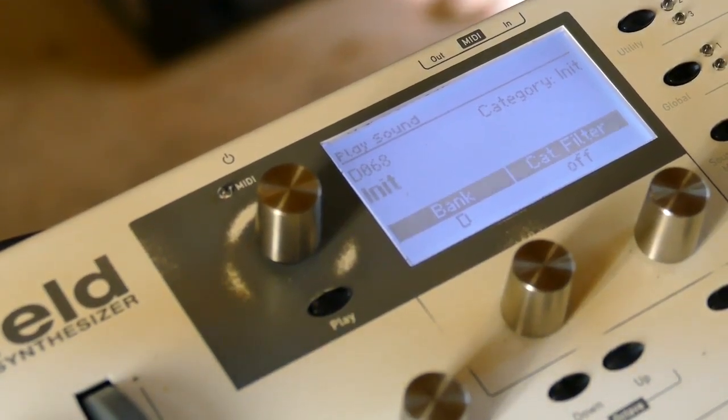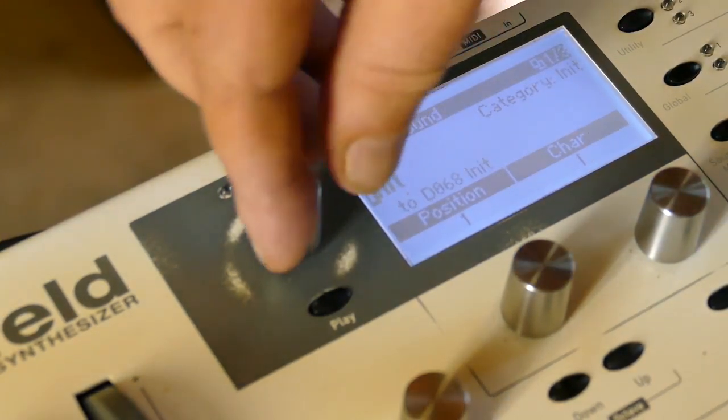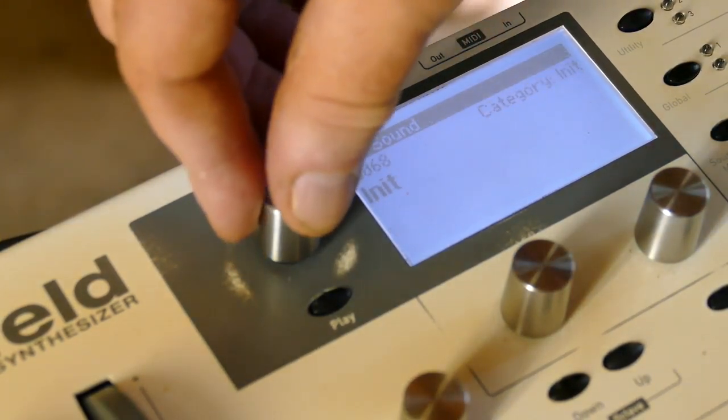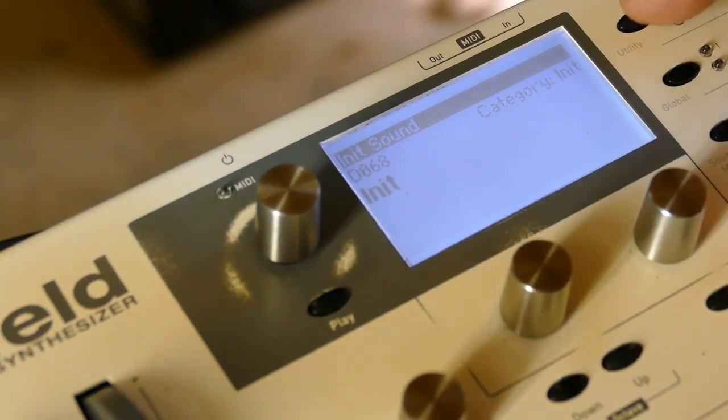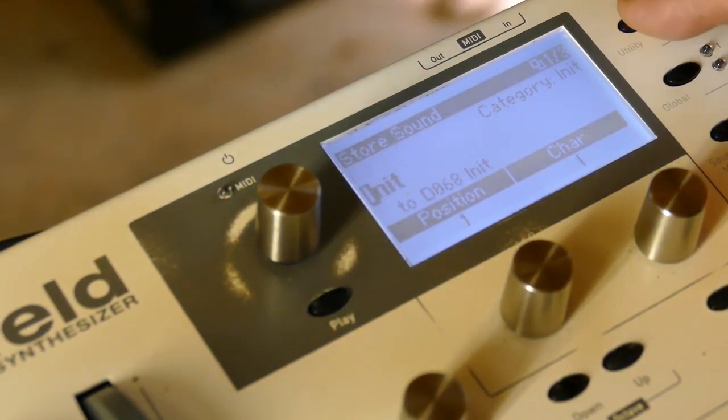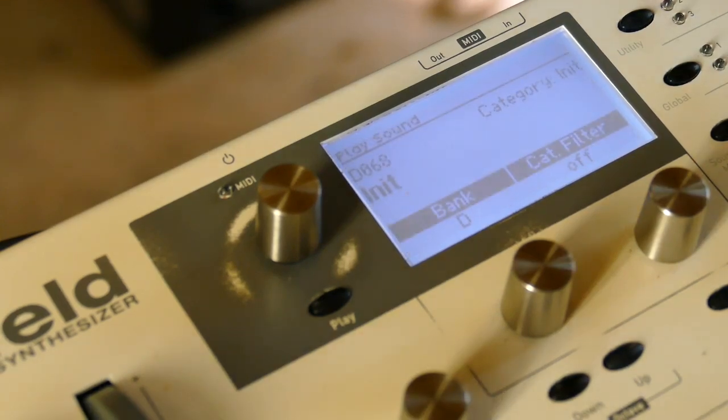This afternoon we'll be experimenting with recursive modulation and filters. Start from the init patch by going to shift utility, scroll over to init sound, hit shift utility, and you can save it. That's now an init patch.